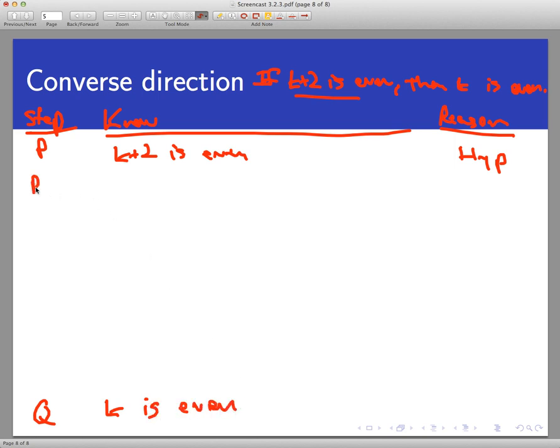And let's see. So if k plus 2 is even, then there exists another integer. I called it q in the forward direction. Let's call it r in this direction. An integer r such that k plus 2 equals 2r. And again, this is the same reason as before: definition of even. Now I have something I know about k plus 2. I'm looking to say something about k. So perhaps the right thing to do would be to subtract 2 from both sides. Solve for k. So I get 2r minus 2. That's about as simple algebra as you can get.